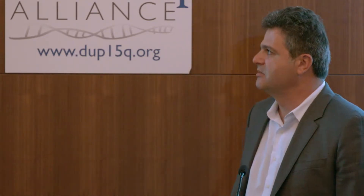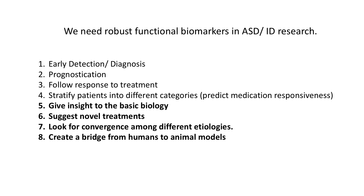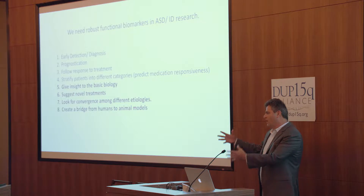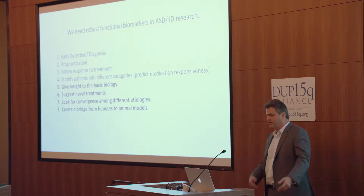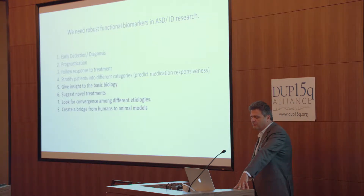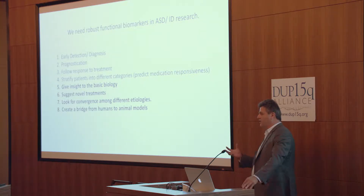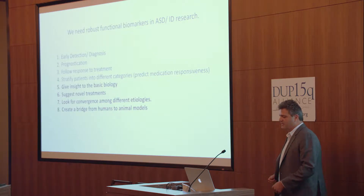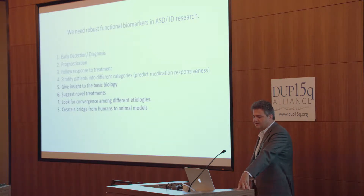So why do we need biomarkers for ASD, DUP15Q, or intellectual disability? How do biomarkers help you? If you can discover a robust biomarker — especially a robust functional biomarker — it helps with early detection and diagnosis. You can use the biomarker for prognostication, you can follow a response to treatments, you can stratify patients. Maybe a group of patients who have one biomarker signature will respond to a treatment and another won't. You can gain insight into basic biology — and that's where I come in with looking for electrophysiological biomarkers of DUP15Q. Maybe the biomarker tells you something you didn't know about the basic biology, and you can go dig there and discover what's really going on.